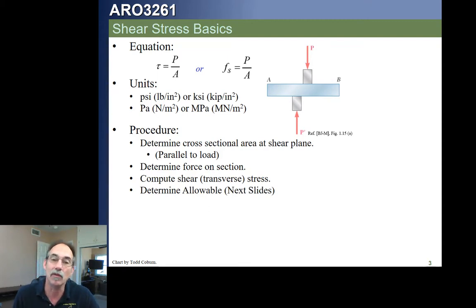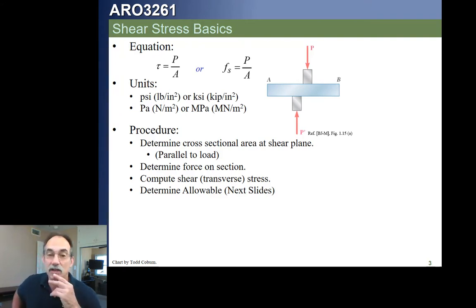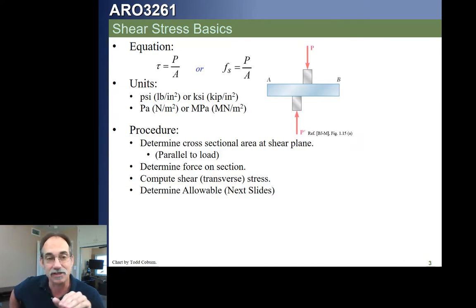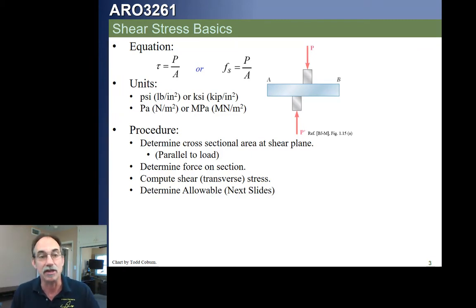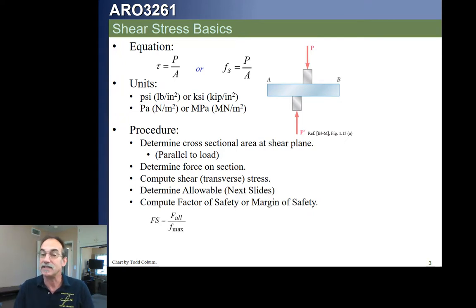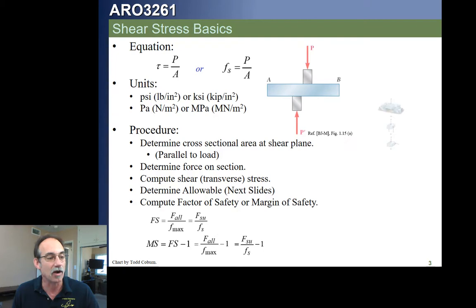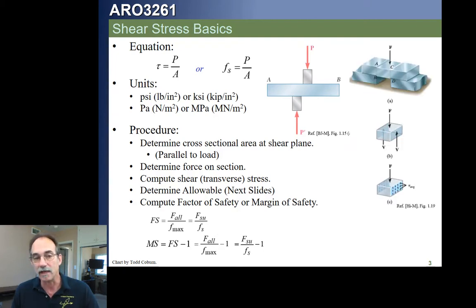We'll then find the allowable. Before, we were looking at normal stresses compared to FTU or FTY. But since this is a shear stress, we need a shear allowable — we call that FSU: capital F for allowable stress, S for shear, and U for ultimate. We get FSU from Appendix E the same way we got FTU and FTY. The margin of safety is FSU divided by the calculated ultimate shear stress, minus one.